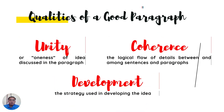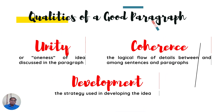Next is the qualities of a good paragraph. Number one is unity — the oneness of idea discussed in the paragraph. Next is coherence — the logical flow of details between and among sentences and paragraphs. And lastly, development — the strategy used in developing the idea.